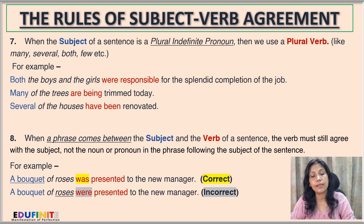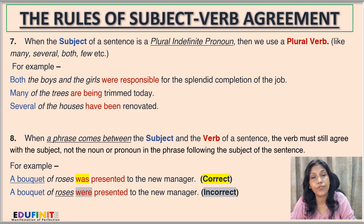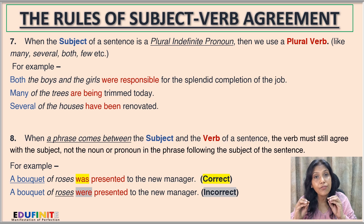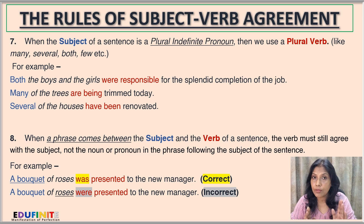Rule number eight: when a phrase comes between the subject and the verb, the verb must still agree with the subject — not the noun or pronoun in the intervening phrase. For example: 'A bouquet of roses was presented to the new manager.' Here 'a bouquet' is the subject. Since 'a bouquet' is singular, we use the singular verb 'was'. We do not focus on 'of roses', which is just the phrase in between.